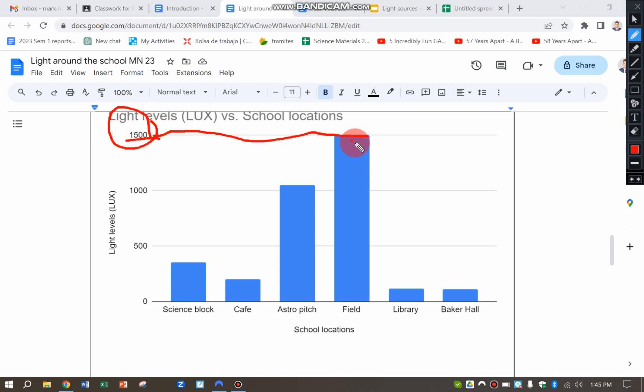So that's the highest level there, as you'd expect, because there's no shade. And the lowest level here, pretty even, is either the Baker Hall or the library, which has a very low level, I'd say approximately about 100 lux.